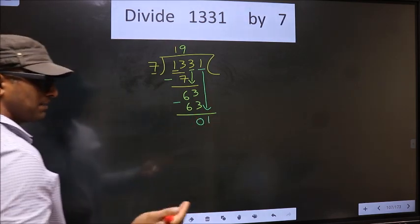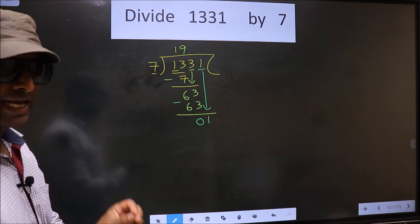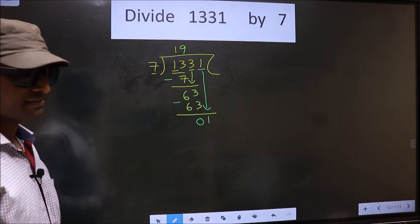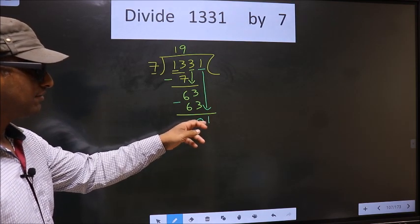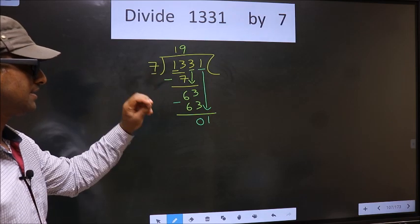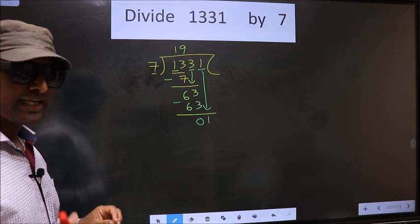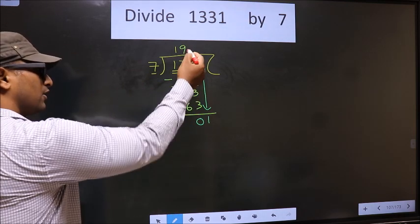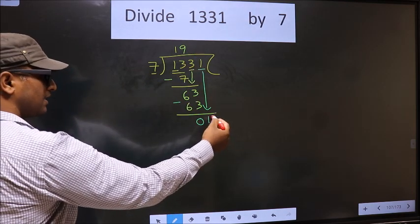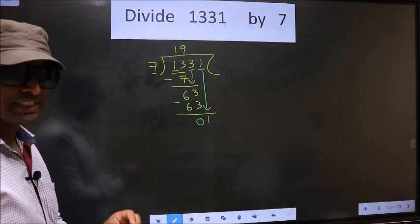Now you will bring down the beside number that is 1 down. This is where the mistake happens. And the mistake is this. Here we have 1. Here 7. 1 is smaller than 7. So what many do is they put a dot and take 0 here.